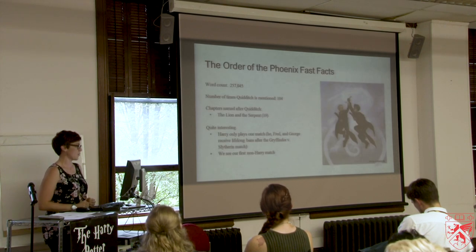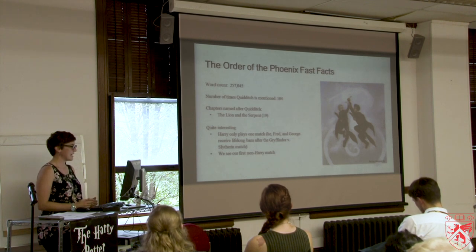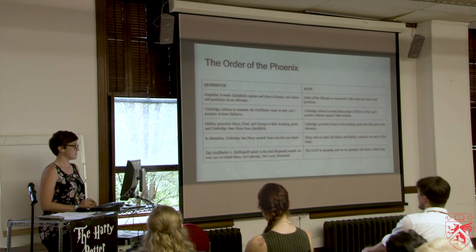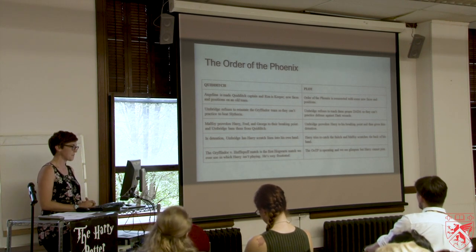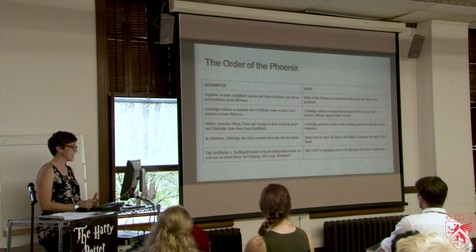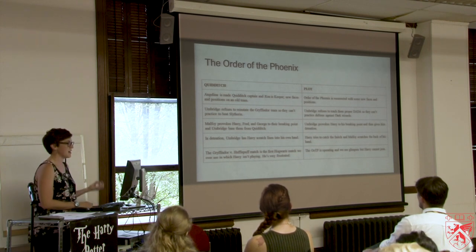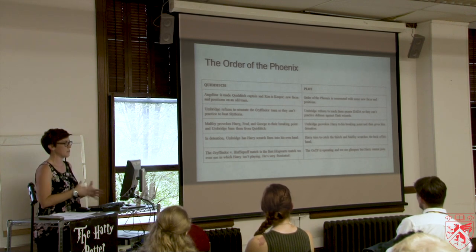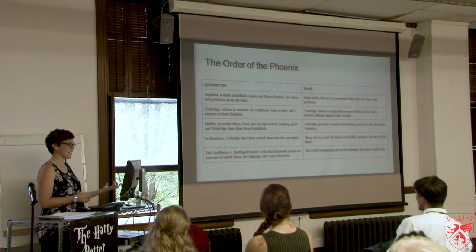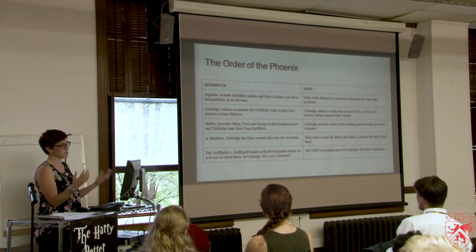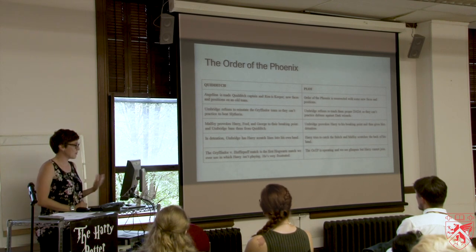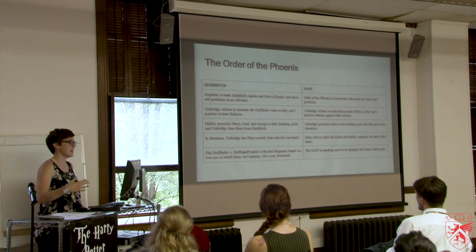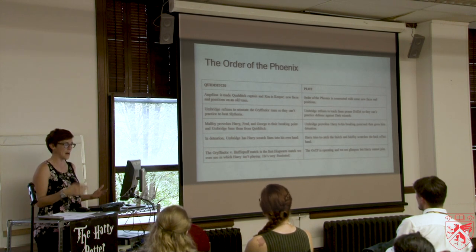Order of the Phoenix has one Quidditch chapter, 'The Lion and the Serpent.' Harry only plays one match before he, Fred, and George are banned, and we see our first non-Harry match. Angelina is made Quidditch captain and Ron becomes Keeper — new faces and positions on an old team, mirroring the Order of the Phoenix being resurrected with some new faces. Umbridge refuses to reinstate the Gryffindor team, just as she refuses to teach Defense Against the Dark Arts. Malfoy provokes Harry, Fred, and George and Umbridge bans them from Quidditch; Umbridge also provokes Harry and puts him in detention. Umbridge has Harry scratch lines in his own hand, and then Malfoy scratches the back of Harry's hand during the Quidditch match. The Gryffindor-Hufflepuff match is the first at Hogwarts where Harry doesn't play and is very frustrated — mirroring how Harry watches the Order of the Phoenix operate but can't join.